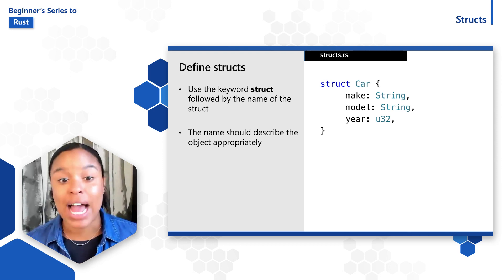An example of a classic struct that you see here is to define a car object and then group the related attributes, which are make, model, and year. Notice that make and model are of type string, and year is an unsigned integer that is 32 bits.